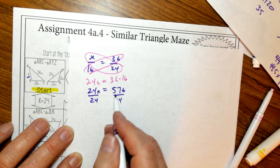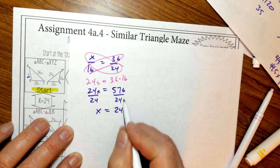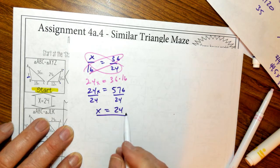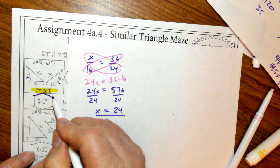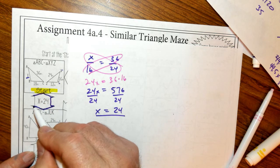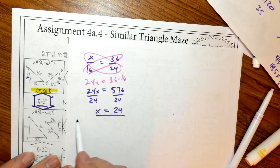And when I divide by 24, well, that's a perfect square. 576 is 24 squared. That's my solution. So I'm going to follow this arrow because that's where my answer is. I got X equals 24. So I'm going to do the next one.